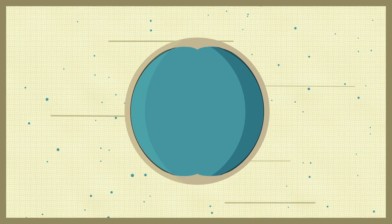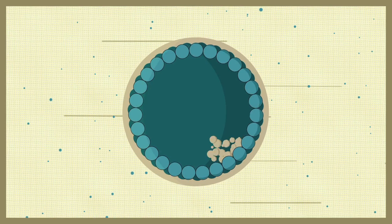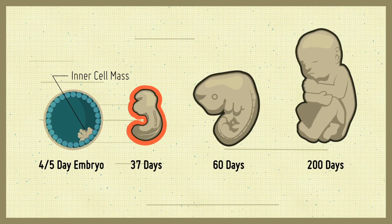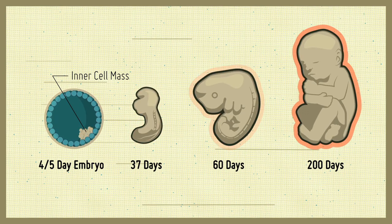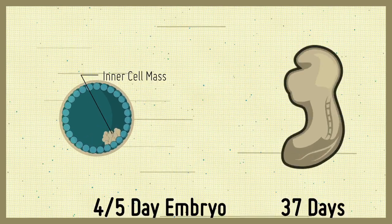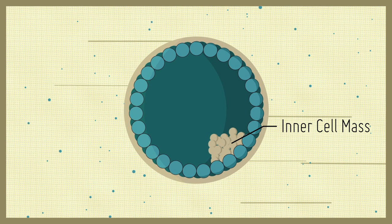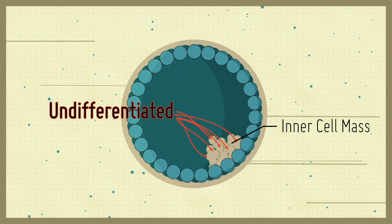Following fertilization, the developing embryo contains a group of cells known as the inner cell mass, that will eventually go on to form all tissues of the body. However, at this early stage of development, these cells have not yet committed to become a specific type of cell and are said to be in an undifferentiated state.